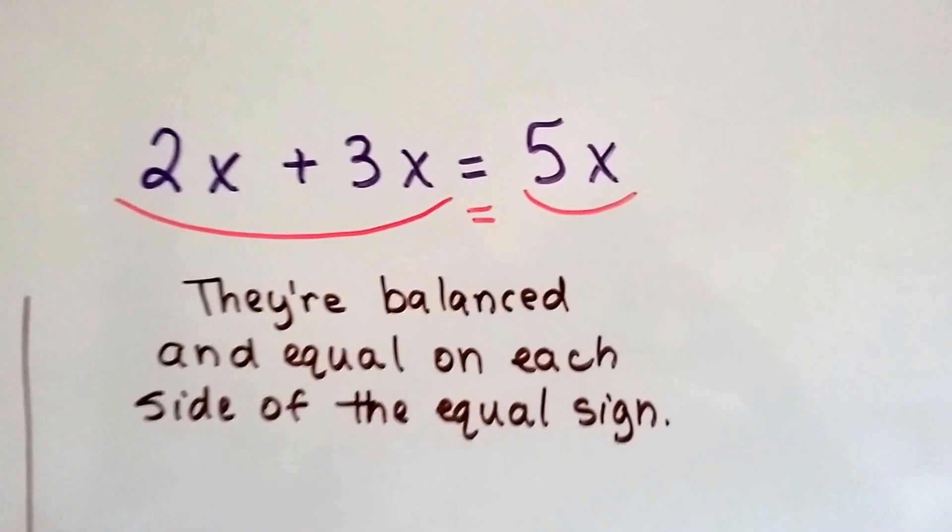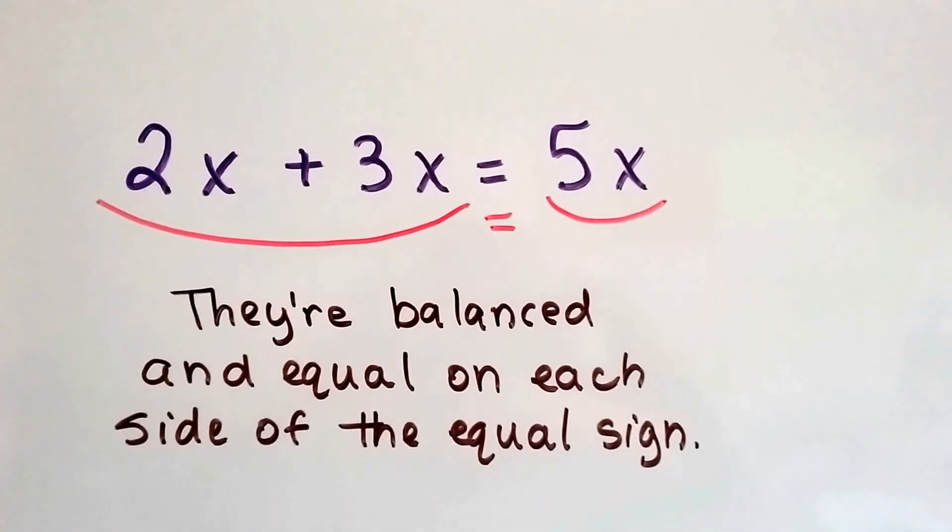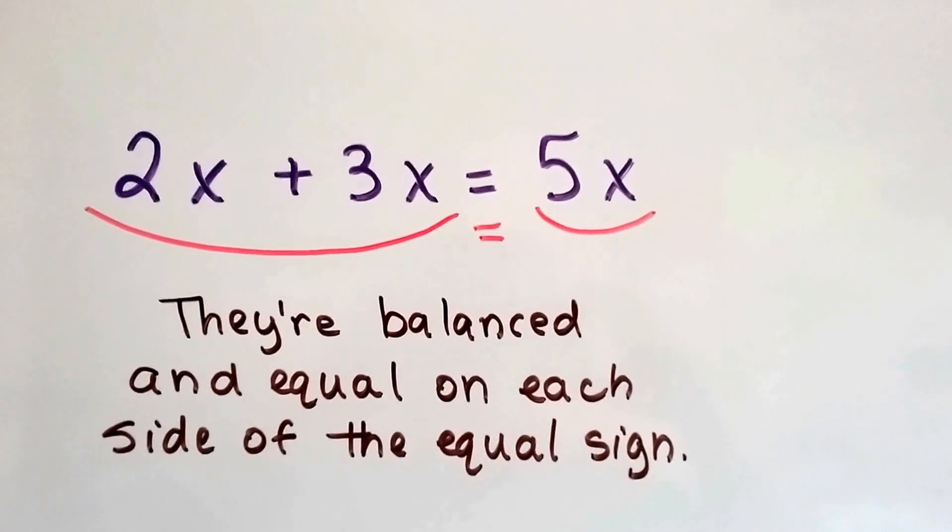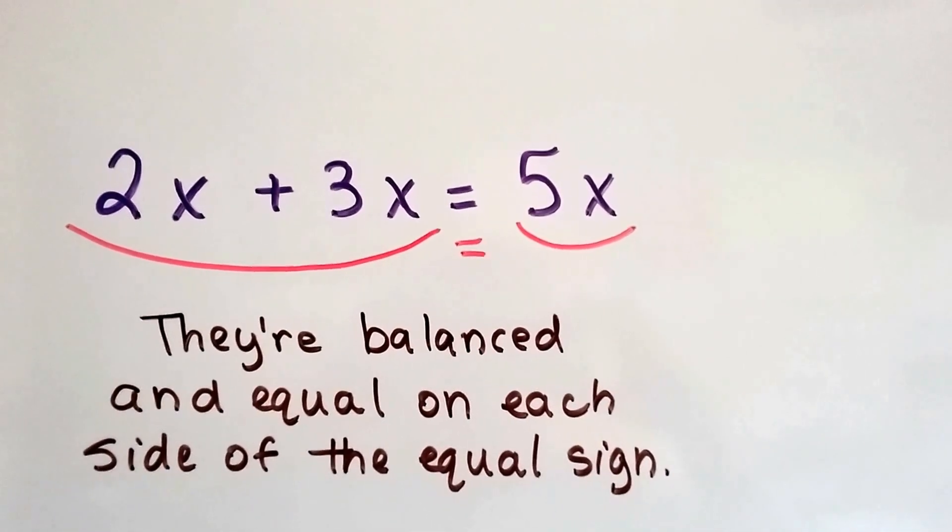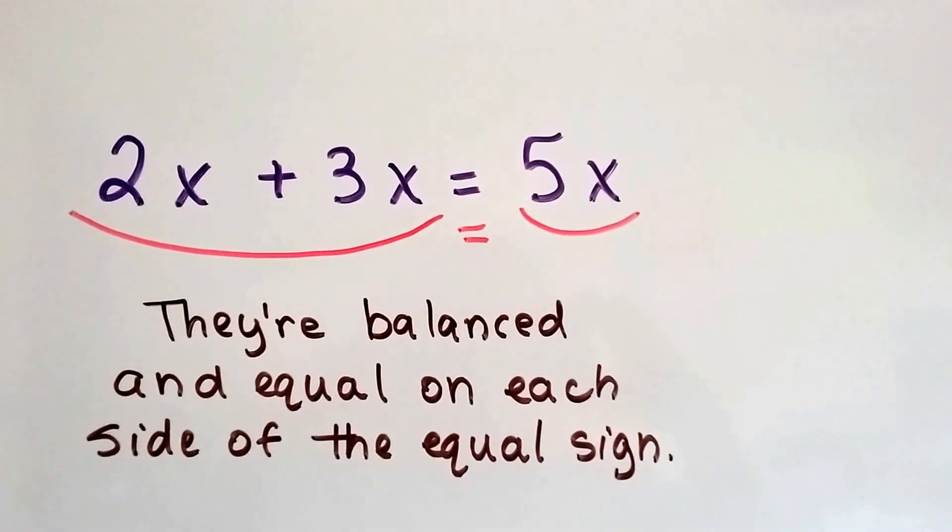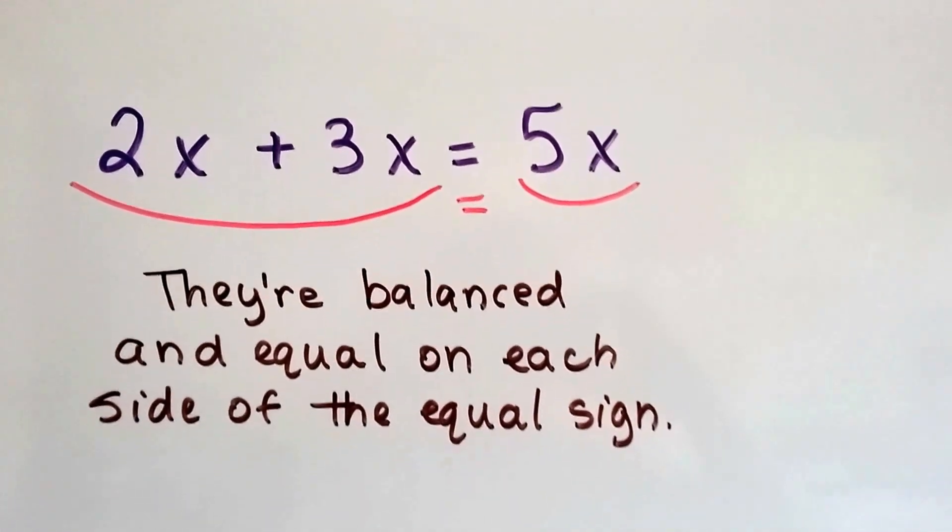Take a look at this. We have 2x plus 3x equals 5x. The 2x plus 3x on the left side weighs the same as the 5x on the right side. They're balanced and equal on each side of the equal sign.